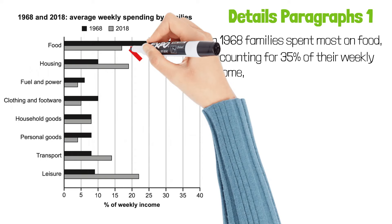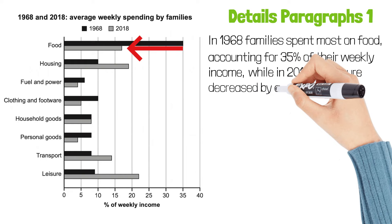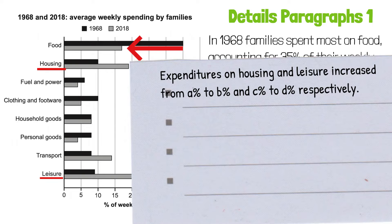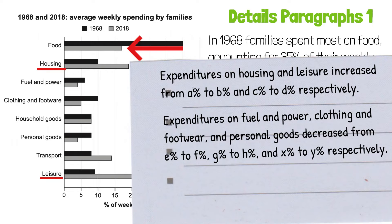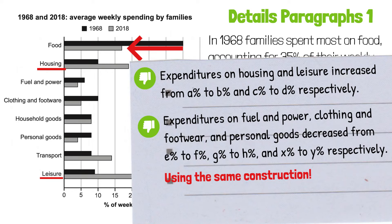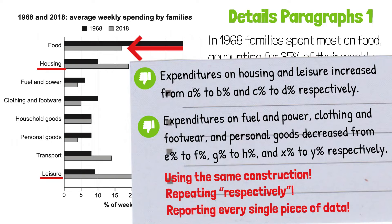Then I will describe the decrease: while in 2018, this figure decreased by almost half to around 17%. Now, for housing and leisure, I'm not going to say spending on housing and leisure increased from A to B percent and C to D percent respectively. And when reporting the remaining categories, I'm also not going to say that expenditures on fuel and power, clothing, and footwear and personal goods decreased from E to F percent, G to H percent, and X to Y percent respectively. I don't think it's a good way to report data — this uses the same grammatical construction again and again, and uses 'respectively' again and again. Most importantly, it's reporting every single piece of data rather than selecting and reporting the main features.